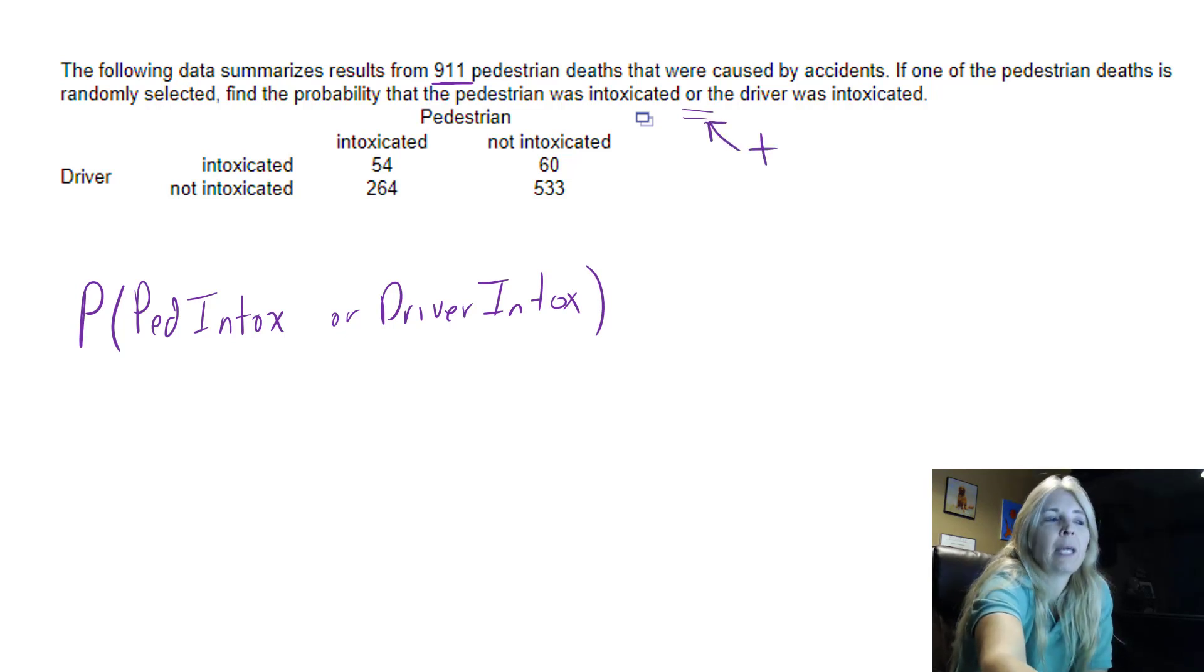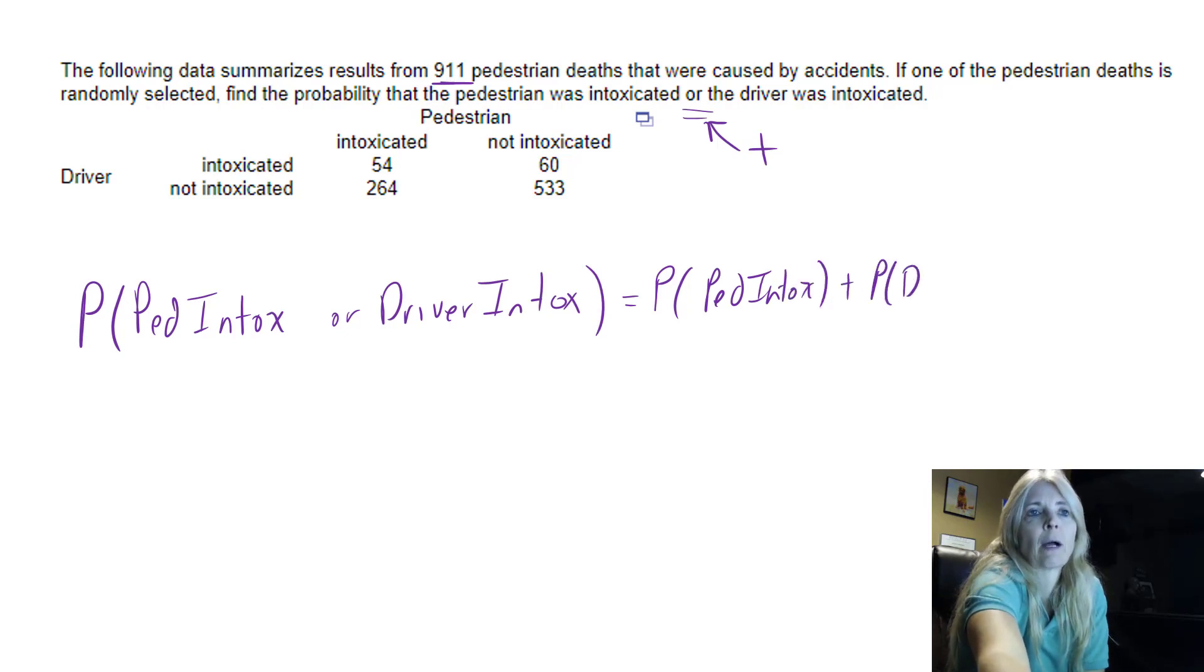Now the only problem, you can't just add these probabilities. You can't just say the probability that a pedestrian is intoxicated plus the probability a driver is intoxicated. You can't just add those alone and you'll see why.